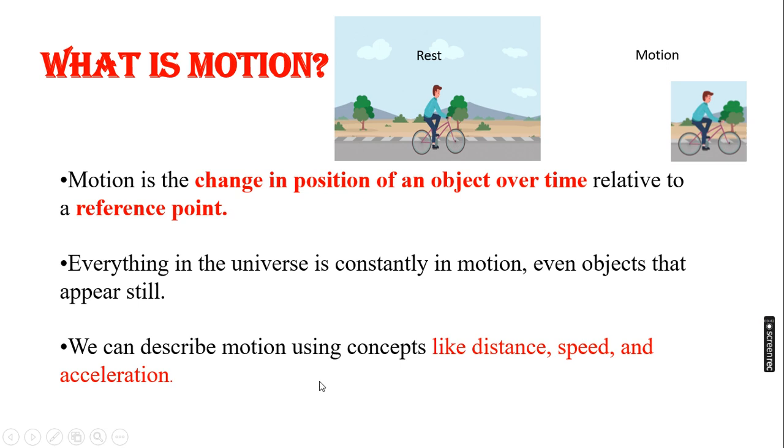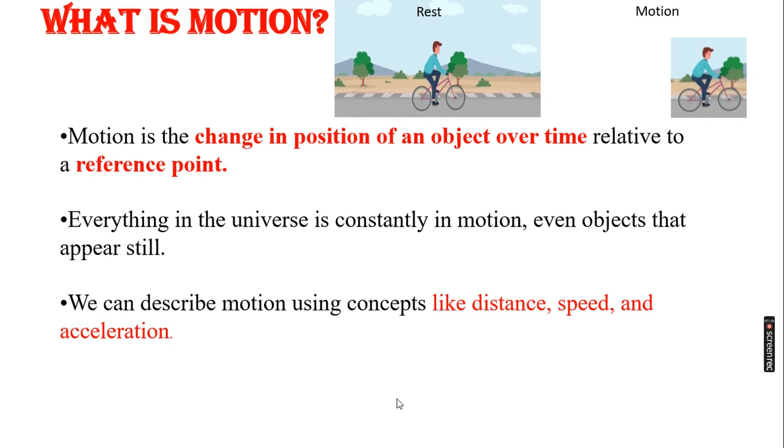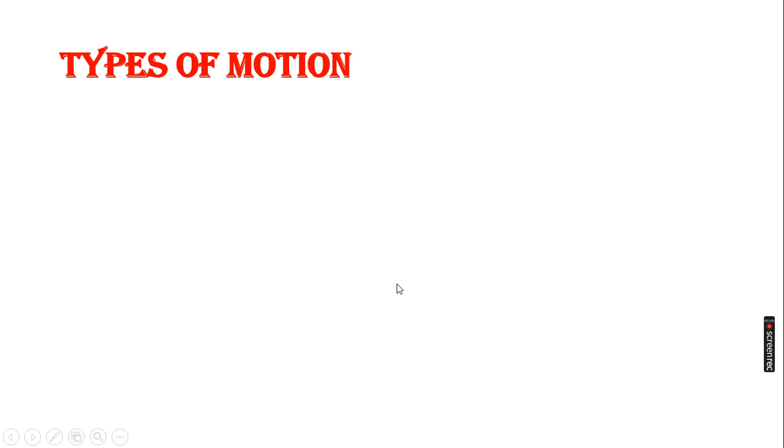So we can describe motion. If we want to describe motion, then we can describe three things: distance, speed, acceleration. We will understand this later. So let's see first a type of motion.